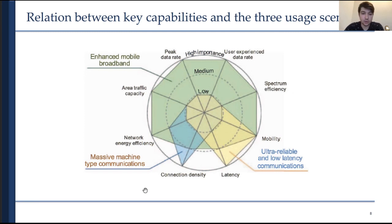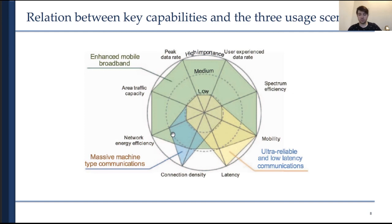This diagram shows how those KPIs are important for different use cases. For eMBB, energy efficiency, area traffic capacity, data rate, experienced data rate, spectrum efficiency, and mobility are of high importance, while latency and connection density are less important. For mMTC, increased energy efficiency is critical for long battery life in sensor networks, and connection density is essential — that's the meaning of 'massive' in mMTC. For URLLC, very low latency and high mobility support are key, while data rates are less important.